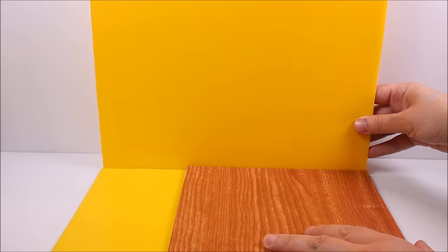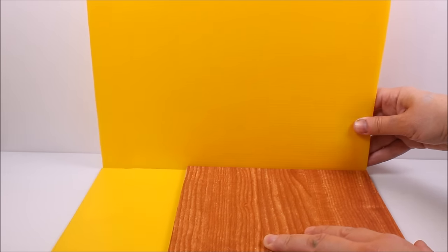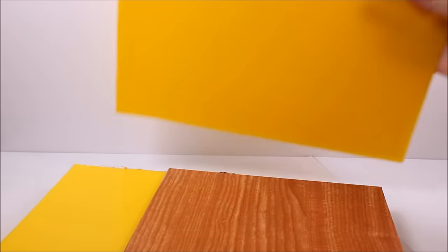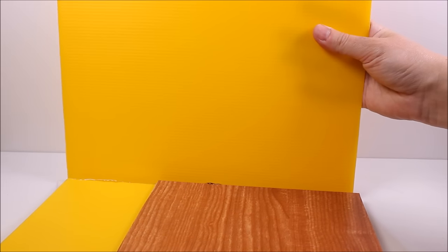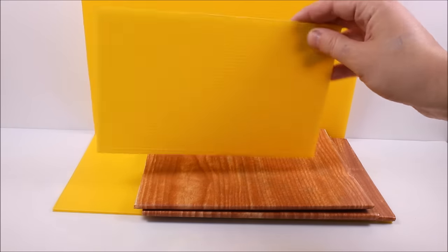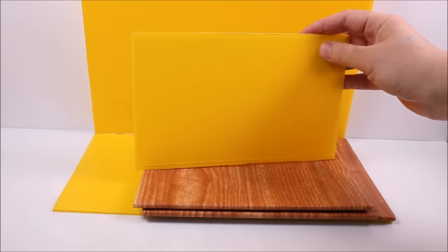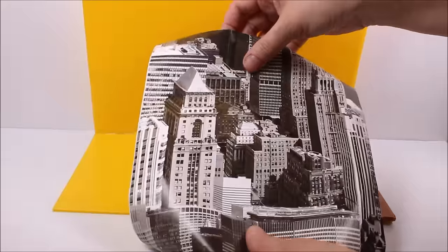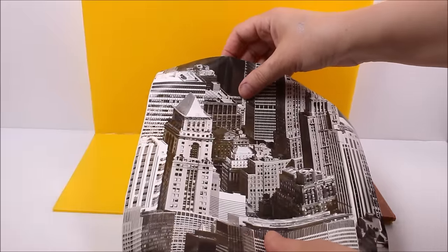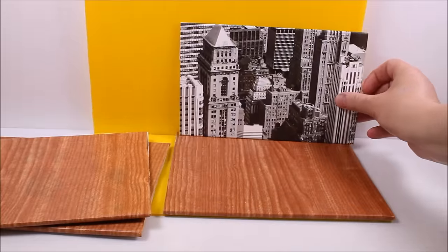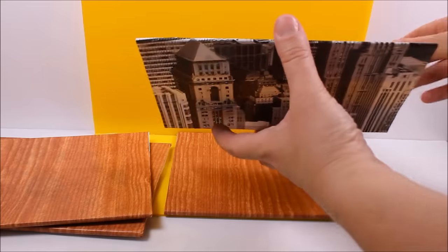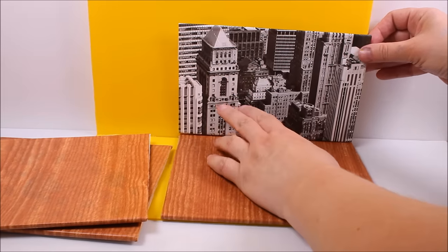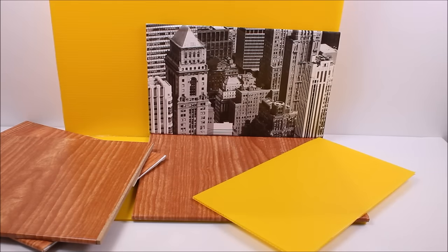Now I'm going to glue these two pieces together. Now I need another wall, and since I'm making a bookstore, I would like to cover it with this piece of contact paper. That's the wall, and I'm going to glue it to the back of the ground floor.